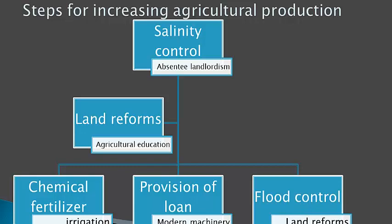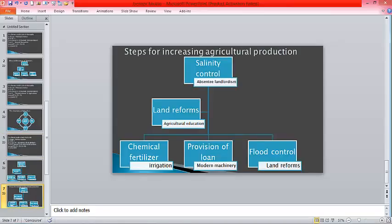Land reforms again: we should carry out land reforms so that maximum land can be made cultivable. Our cultivable land is limited; the government should use various methods to convert uncultivable land into cultivable land.